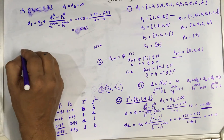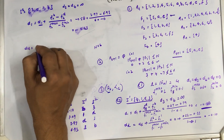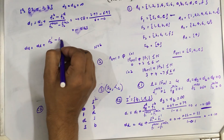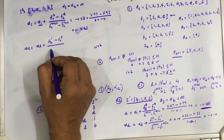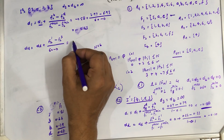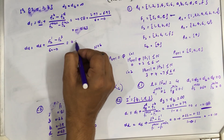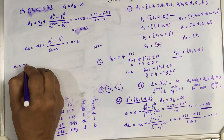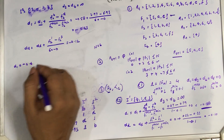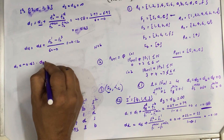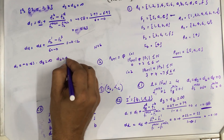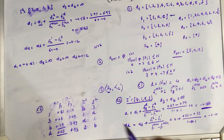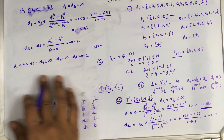Similarly, we calculate DD as: DD plus [F2(1) minus F2(3)] divided by (60 minus 0). After fetching values and calculation, DD equals 0.12, or minus 0.12. So the final crowding distance values are: D1 = minus 0.63, D3 = infinity, DB = infinity, and DD = minus 0.12.